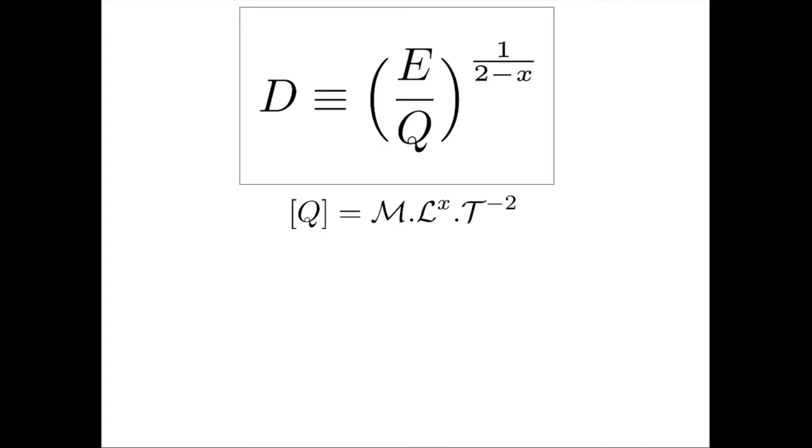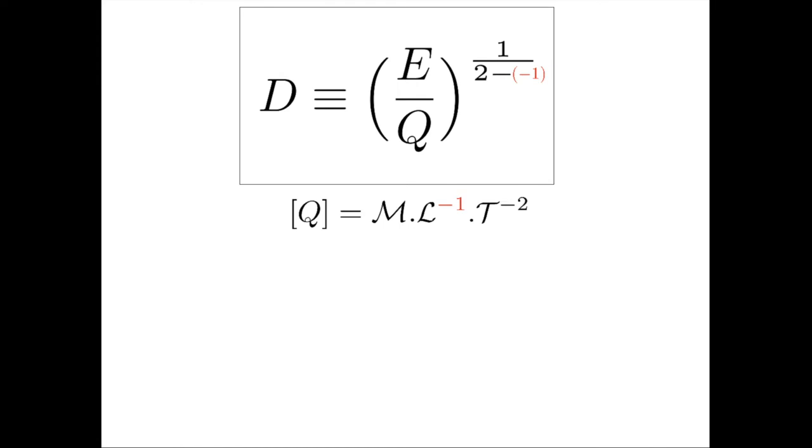For now, we will consider an important case, when x equals minus 1. In that particular case, the final radius d is expected to be proportional to the cubic root of the energy e. What kind of mechanical quantity Q has dimensions m, l minus 1, t minus 2? It has different names depending on the context - sometimes called a pressure, or an elastic modulus, of which there can be many kinds: young modulus, bulk modulus, shear modulus. We will call Q by an umbrella term - we will say that Q is a stress, and we will use the symbol sigma. Where does this stress come from?